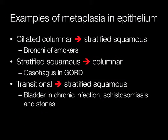Some examples of common types of metaplasia in epithelium are: ciliated columnar epithelium converting to stratified squamous epithelium in the bronchi of smokers; stratified squamous epithelium changing to columnar epithelium in the esophagus in gastroesophageal reflux disease; and transitional epithelium converting to stratified squamous epithelium in the bladder when there is chronic infection, schistosomiasis, or stones.